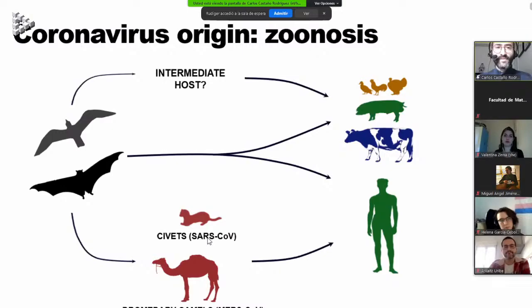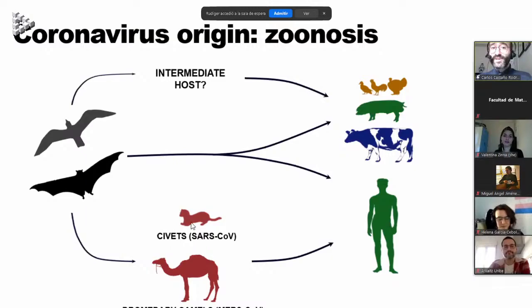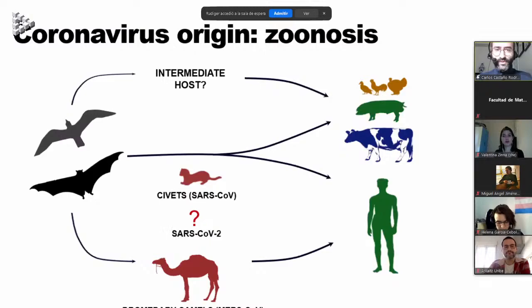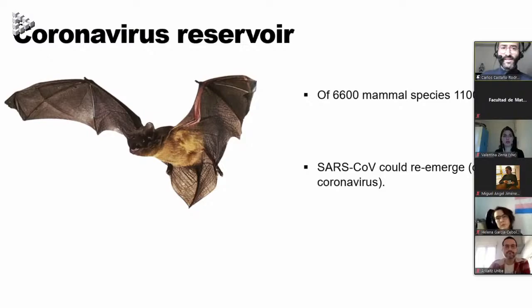The intermediate hosts of SARS-CoV are civet cats, and the intermediate hosts of MERS-CoV are dromedary camels. From these animals, they were transmitted to humans. Both animals are actually eaten in the places where both pandemics started. As for SARS-CoV-2, we do not know yet if there is an intermediate host, because this is not simple to determine.